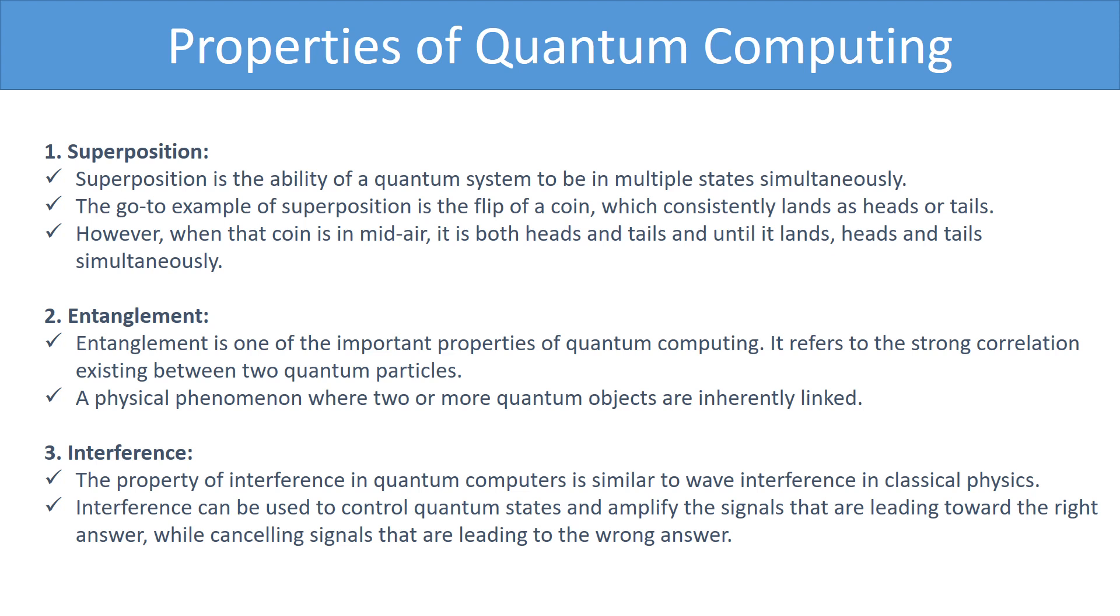Secondly, entanglement. Entanglement in quantum mechanics is a physical phenomenon where two or more quantum objects are inherently linked such that measurement of one rules the possible measurement of another. In other words, a pair or a group of particles interacts, share spatial locality such that the quantum state of each particle cannot be characterized independently of the other particle's state in the same group even when they are separated by a large distance. Entanglement is one of the important properties of quantum computing. It refers to the strong correlation existing between two quantum particles. Entanglement is a quantum property is taking objects and connecting them by permanently entangling them together.